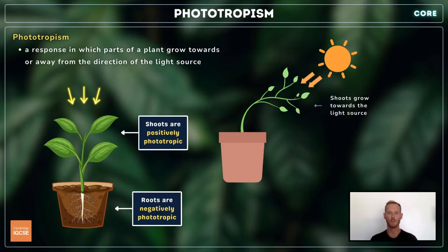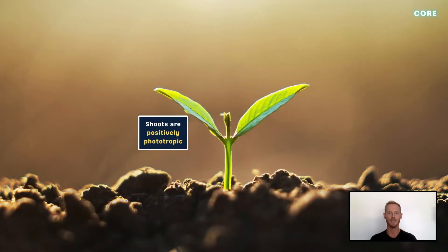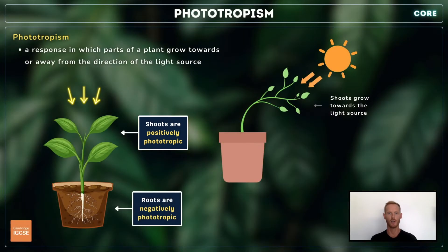Phototropism is a response in which parts of a plant grow towards or away from the direction of the light source. Plant shoots are positively phototropic, meaning they grow towards the light source. This raises the leaves, maximizing light absorption for photosynthesis. In contrast, roots are negatively phototropic, which helps them to grow downwards towards the soil.